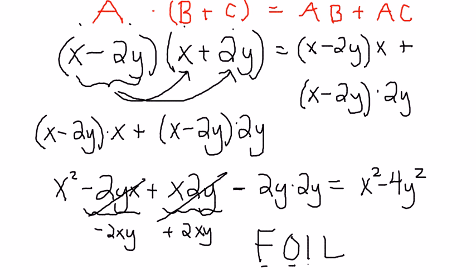But I'll spoil it for you and say F stands for first, O stands for outer, I stands for inner, L stands for last. So, the idea is that you would multiply the first being the x's, the outer being the x and the 2y, the inner being the 2y and the x, and the last being the 2y and the 2y.